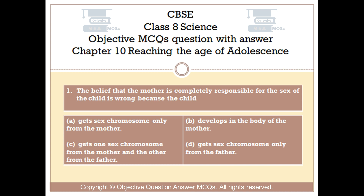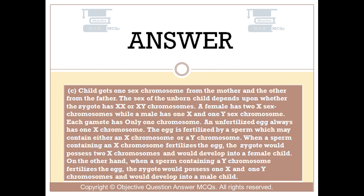The right answer is Option C. The child gets one sex chromosome from the mother and the other from the father. The sex of the unborn child depends upon whether the zygote has XX or XY chromosomes. A female has two XX chromosomes while a male has one X and one Y sex chromosome. Each gamete has only one chromosome. An unfertilized egg always has one X chromosome.